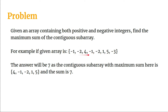If we look at the array, we see that starting from four to five, the subarray four, minus one, minus two, one, five is the contiguous subarray which will have the maximum sum out of all the combinations of subarrays we can obtain. So we have to print out the sum of this contiguous subarray as output.